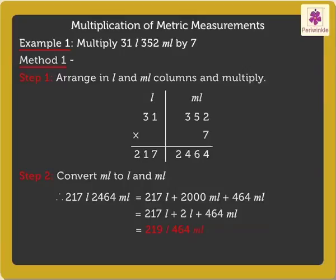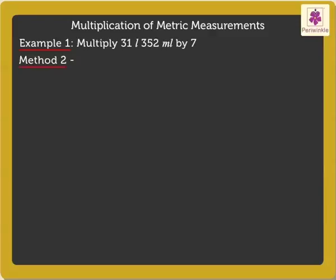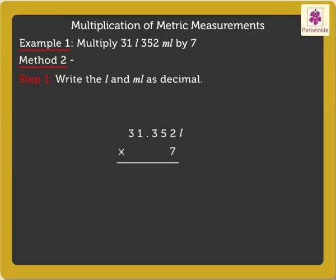Now, let's use method 2 for the same example. Let's follow a few steps to solve this. Step 1: Write the litres and millilitres as decimal. Thus, we get 31.352 litres. Step 2: Multiply using the rules of multiplication.